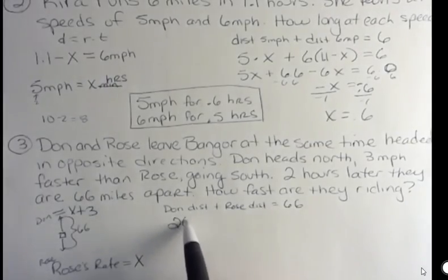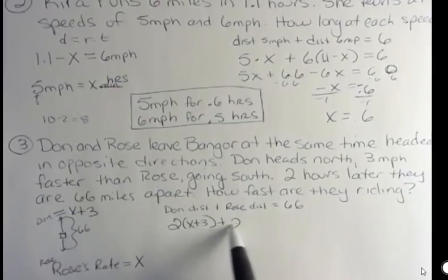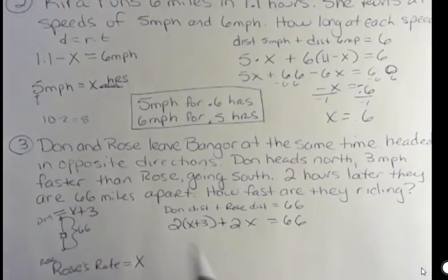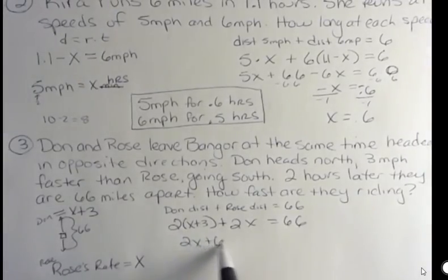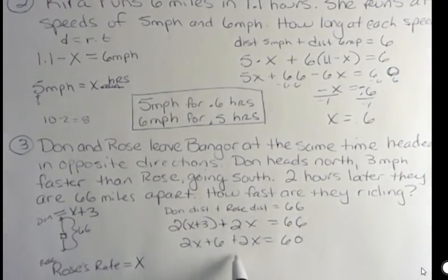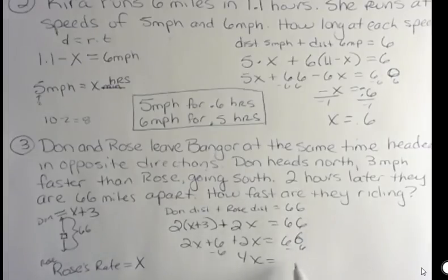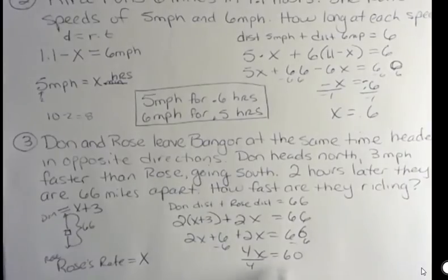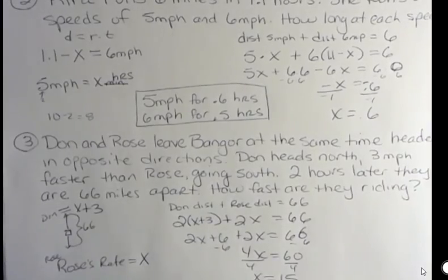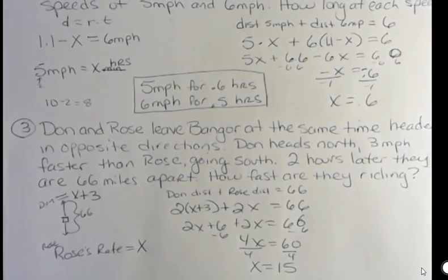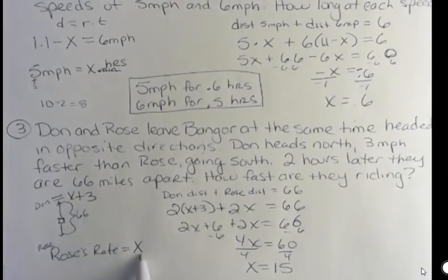So we have 2 times X plus 3 for Don and we have 2 times X for Rose and those things add up to be 66. And that is 2X plus 6 plus 2X equals 66. I keep jumping ahead. 4X equals 60 when I subtract 6 from both sides. And dividing both sides by 4, I get X equals 15. Now who is riding at 15 miles per hour? It's whoever we said was X, which was Rose.